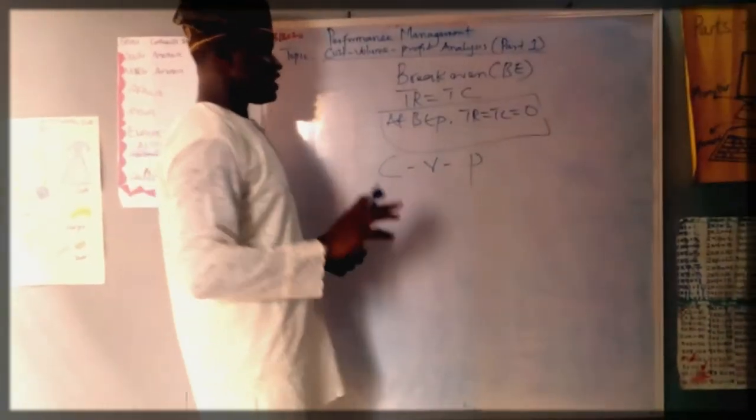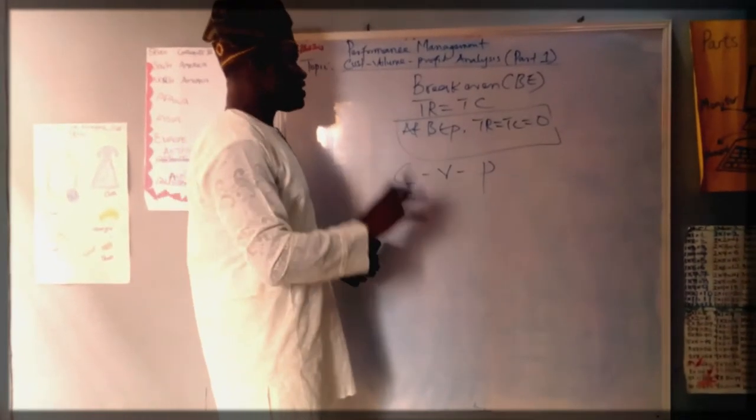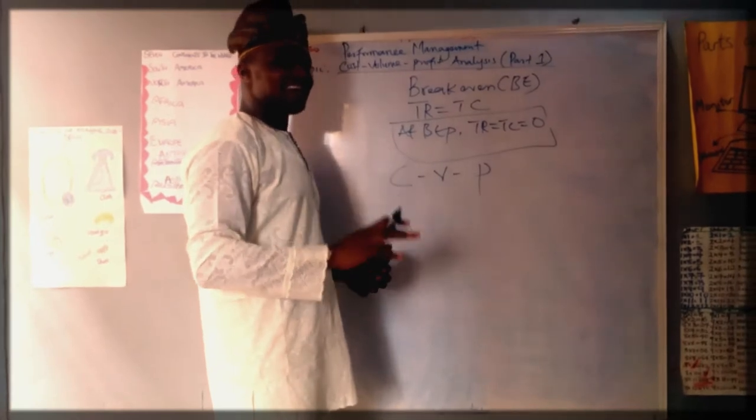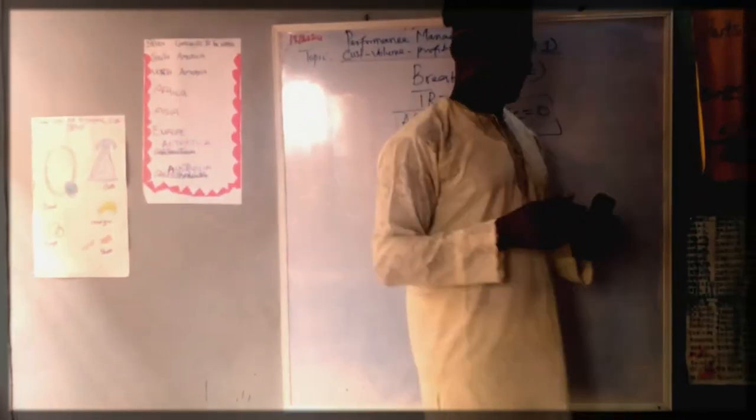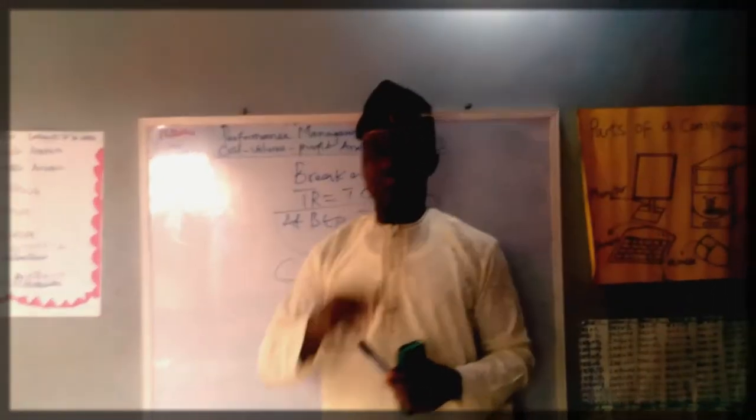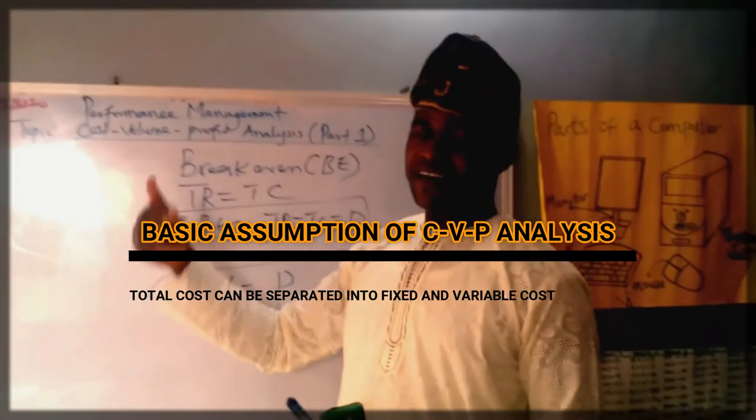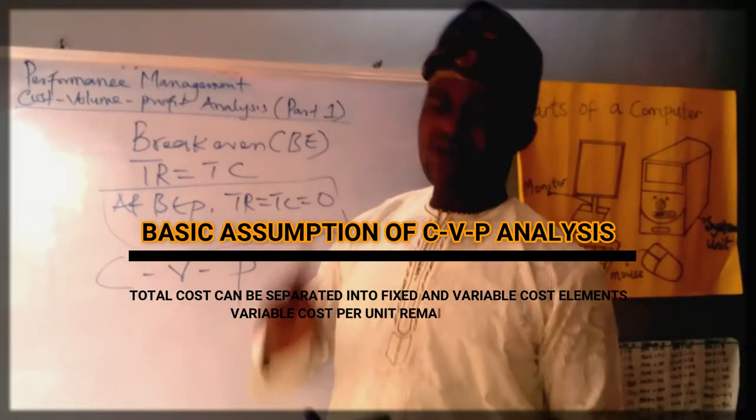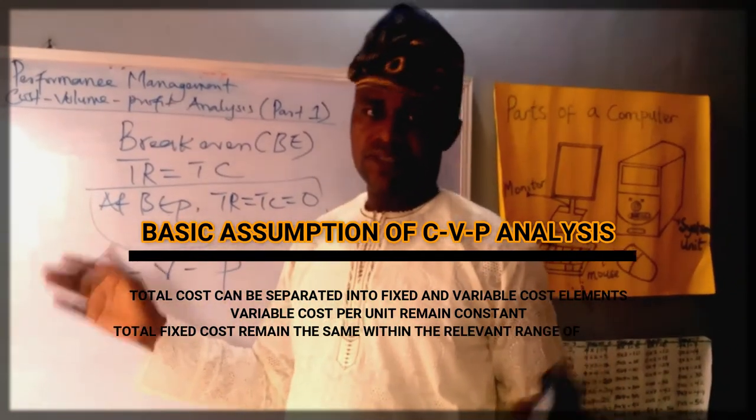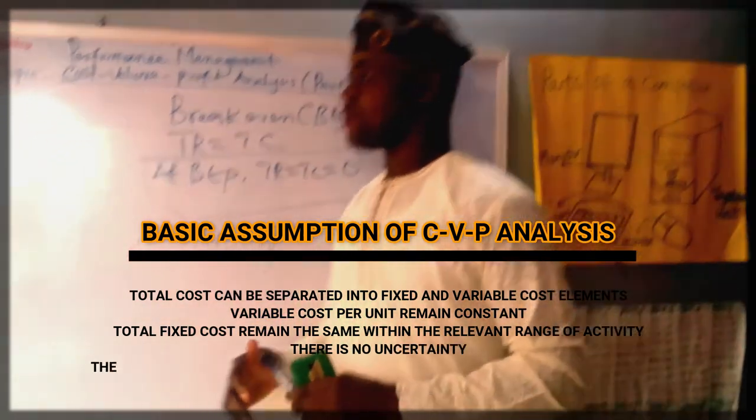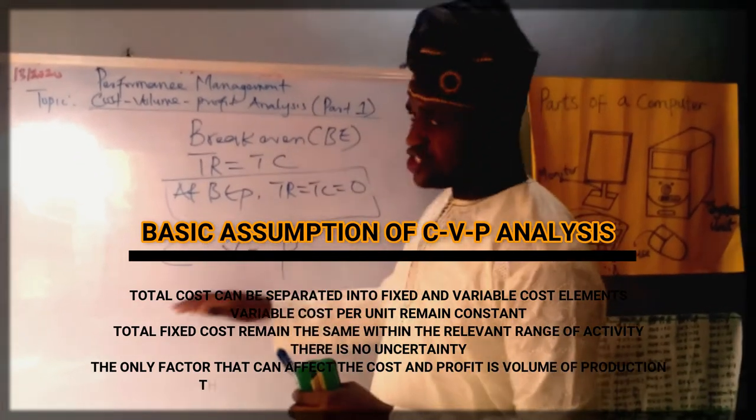Yeah, you must also understand that there are basic fundamental assumptions for using CVP. And, as a student, you must understand at least five or six of these basic assumptions. Now, number one: The total cost can be broken into fixed and variable elements. Number two assumption is that the variable cost per unit is constant. Number three assumption, the total fixed cost remains the same within the relevant range of activity.